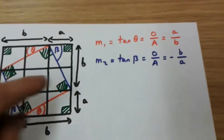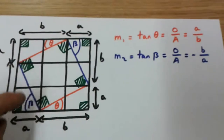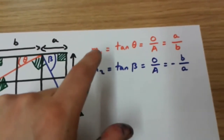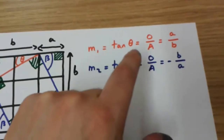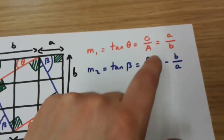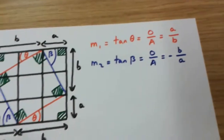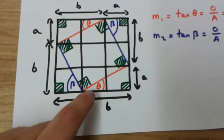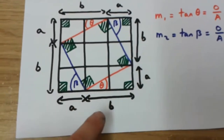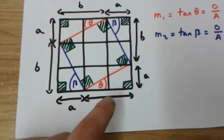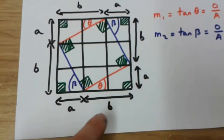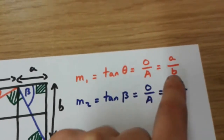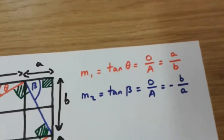Now, m1 is actually the red slope, and m1 is equal to tan theta, which is opposite over adjacent. If we look over here, we can see the angle theta, and in this case it's a over b. Opposite over adjacent is a over b in this case.